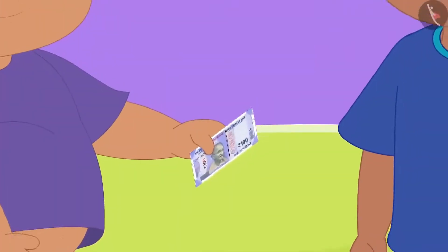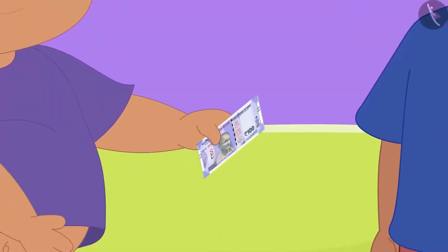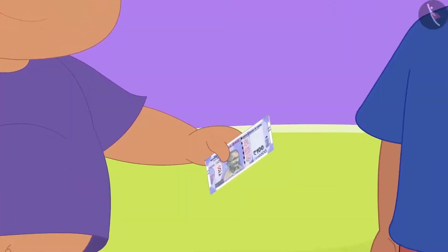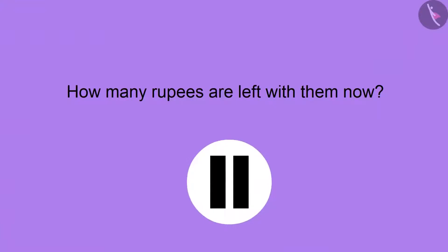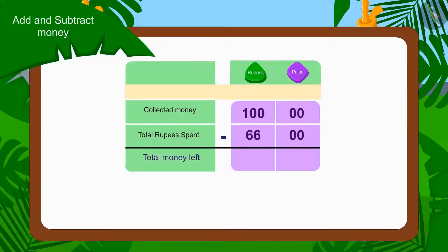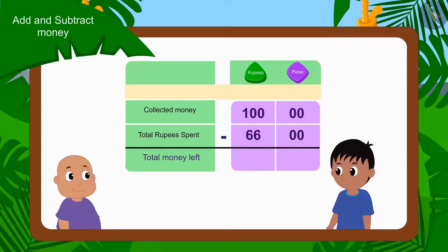Raju and Bablu had 100 rupees in the beginning. So can you tell how many rupees they have left now? You can pause the video and find the answer. Kids, you have found the right answer. Raju and Bablu now have 34 rupees left. Children, we have used subtraction to find this answer.